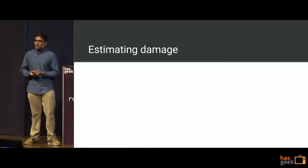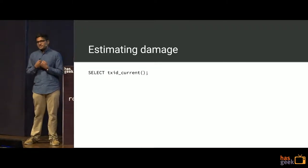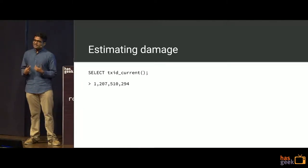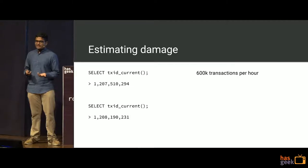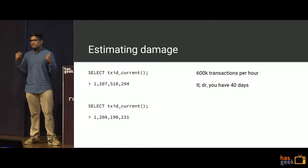The first step was to estimate the damage — when would D-Day happen, when would 2 billion be the magic number? There's a function called txid_current that gives you the current number. It was 1.2 billion. We had this run at hourly intervals during different times of day — peak load, off-load, weekends and weekdays. It was roughly burning through about 600,000 transactions per hour. With 1 billion transactions remaining, that comes to about 40 days.